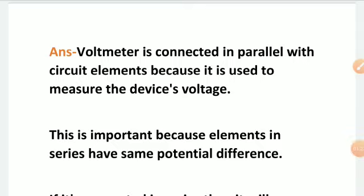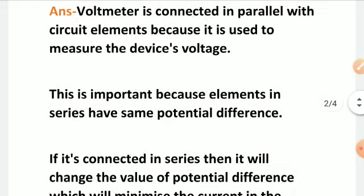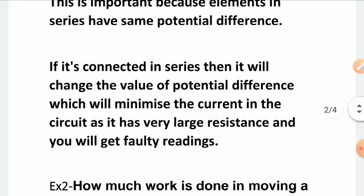The voltmeter is connected in parallel with circuit elements because it is used to measure the device voltage. Elements in series share some potential difference, and if the voltmeter is connected in series, it will change the value of potential difference, minimize the current in the circuit due to its very large resistance, and you will get a faulty reading. To avoid faulty readings, we always connect the voltmeter in parallel across the two points.